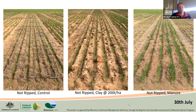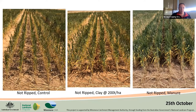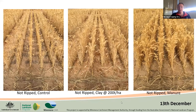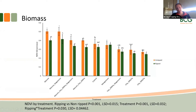Looking at biomass differences over a plot scale, tracking the same three plots through the whole season, manure was off to an early start by end of July and continued through into September, with not much difference between the control and clay. When it came out to head, manure still looked way better, the control fell behind a bit, and clay looked not too bad. Just before harvest, manure was a clear standout. Because building soil carbon is about how much biomass you leave behind, the manure plots had a lot more stubble biomass left after the header had gone over compared to the ripped and control plots. These biomass differences were also captured by drone NDVI measurement at the September stage — clearly out in front was anything that had manure applied.